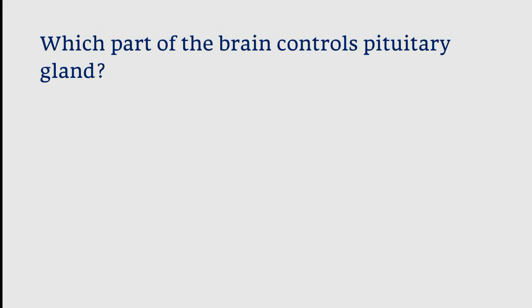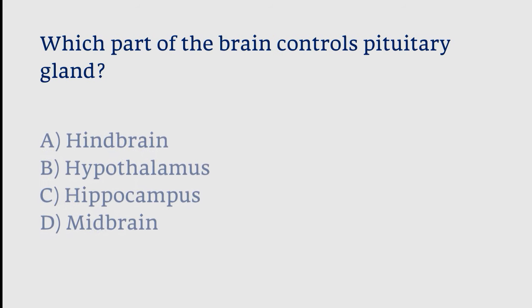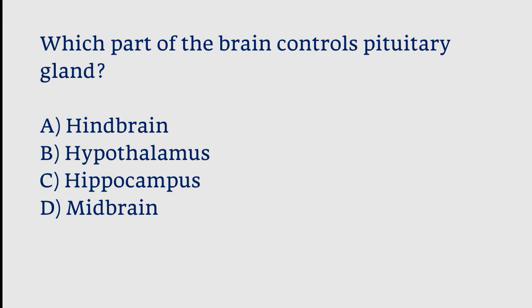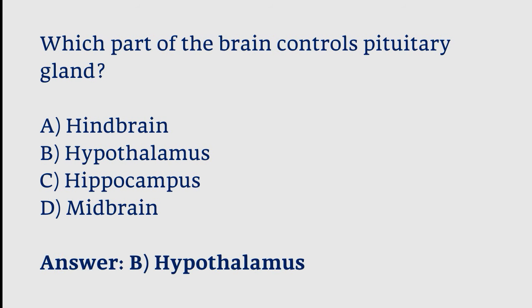Which part of the brain controls the pituitary gland? Options: hindbrain, hypothalamus, hippocampus, midbrain. The correct answer is option B. The hypothalamus part of the brain controls the pituitary gland.